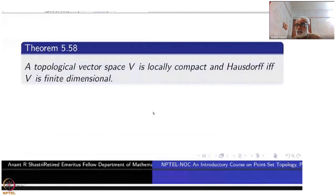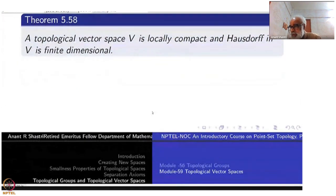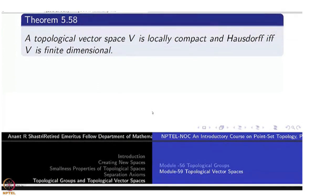So local compactness is an indirect way of capturing that property. Once the unit sphere is compact, the disk is compact. Saying a normed space has a compact unit sphere is equivalent to saying the zero element has a compact neighborhood. That is the definition of local compactness here — we have brought back the compactness property while avoiding the metric.